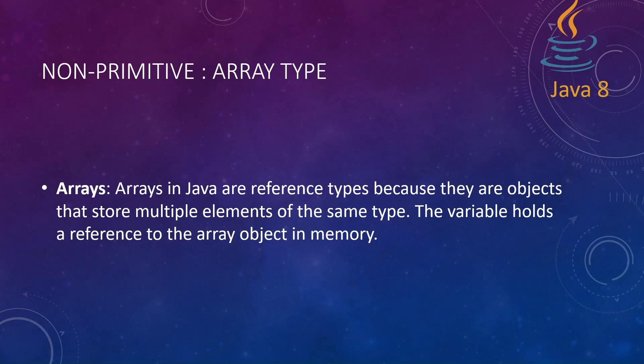In this video we will be discussing about the second reference type, otherwise called as non-primitive variable, which is array type. Array in Java is a reference type because they are objects that store multiple elements of the same type. The variable holds a reference to the array object in memory.